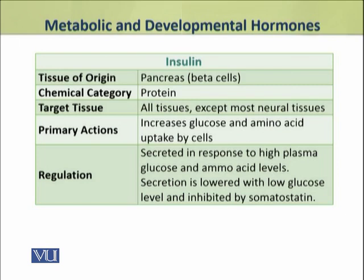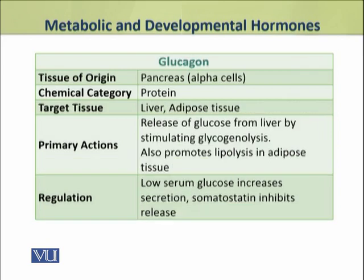Insulin secretion is stimulated by high plasma glucose and amino acid levels. Glucagon, on the other hand, is secreted in response to low glucose levels. Its primary action is to stimulate glycogenolysis. It also promotes lipolysis in adipose tissues.